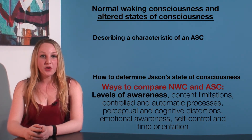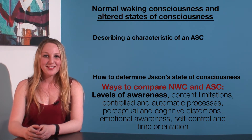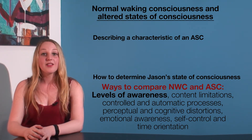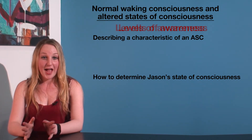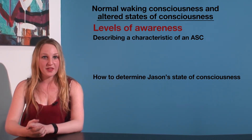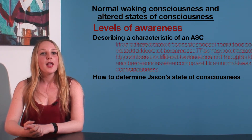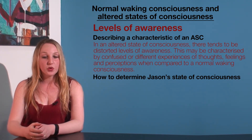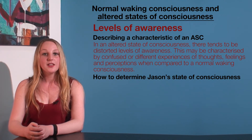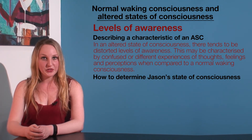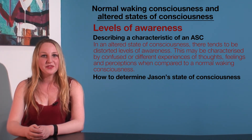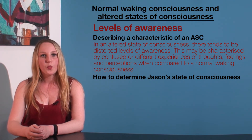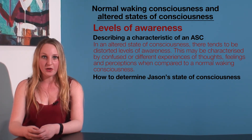There are many characteristics of consciousness that we could use for this question. Let's choose the first one: levels of awareness. We need to provide a description of that. For example, in an altered state of consciousness, there tends to be distorted levels of awareness. This may be characterized by confused or different experiences of thoughts, feelings and perceptions when compared to normal waking consciousness.